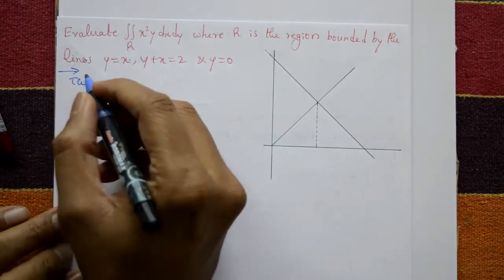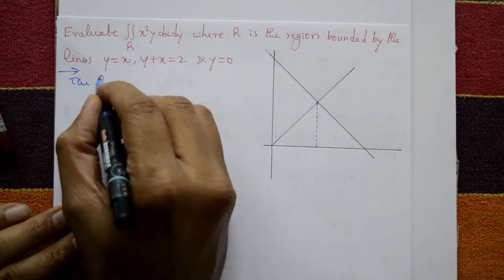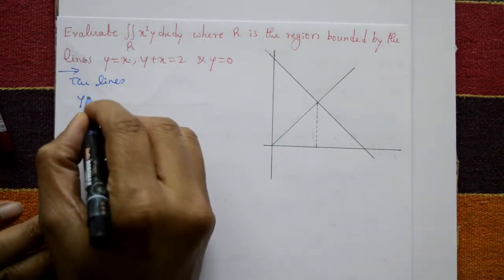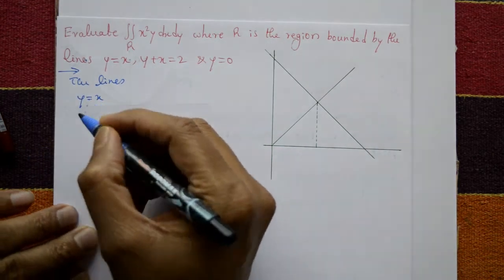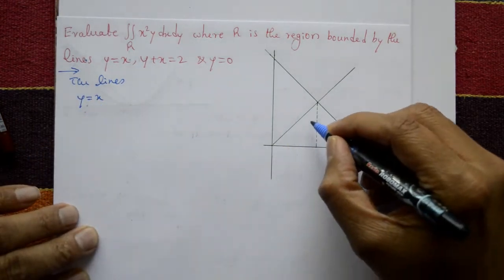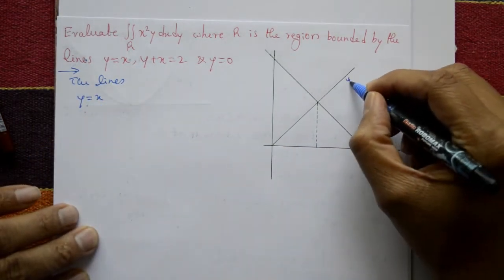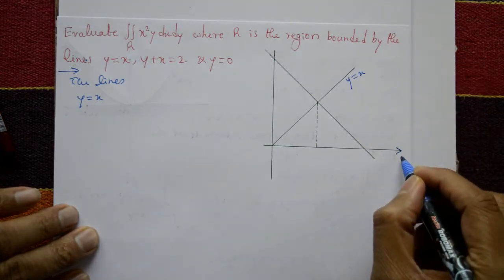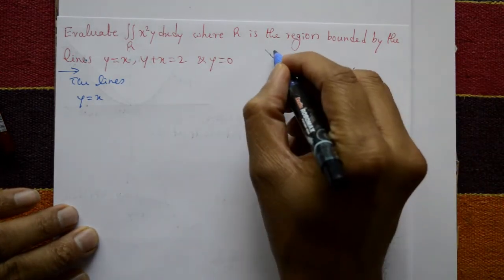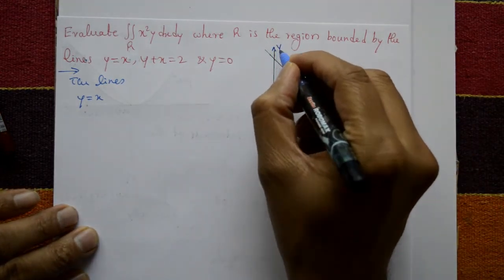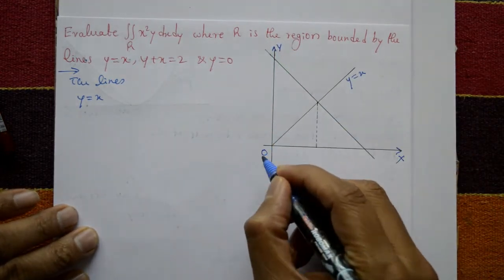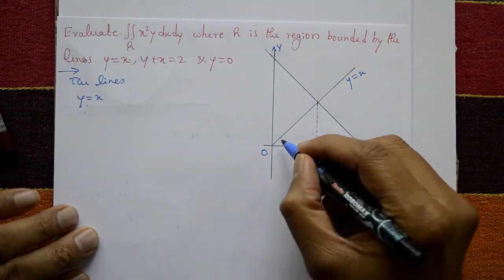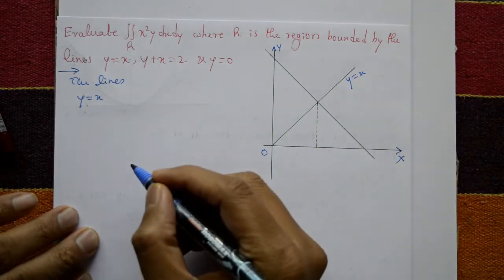The lines are: first, y equals x. This is the x-axis and this is the y-axis; this is the origin. The line y equals x passes through the origin.